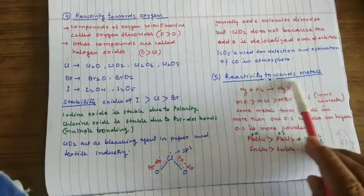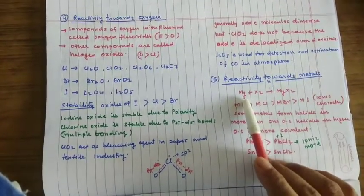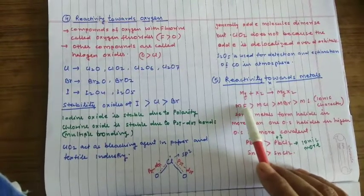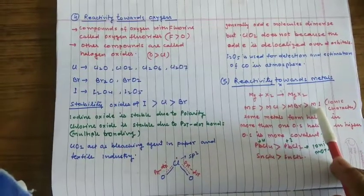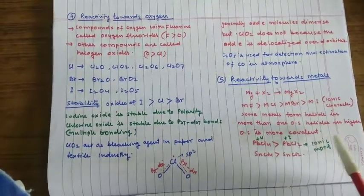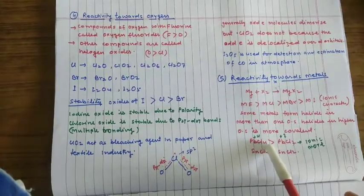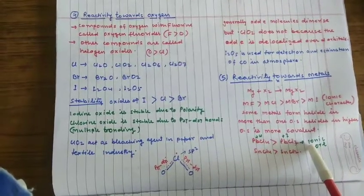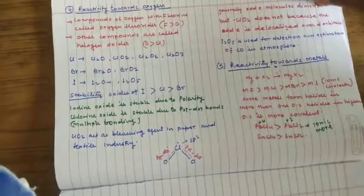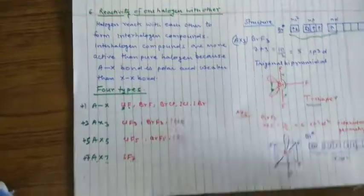If you see the reactivity towards metals, halogen reacts with metals to form metal halide. Metal halides are generally ionic. If you keep metal constant and vary halogen, as you go down the group, ionic character will decrease. Some metals form halide in more than one oxidation state. The halides in higher oxidation state will be more covalent and halides in lower oxidation state will be more ionic. This is due to polarization effect.